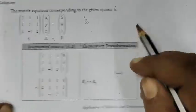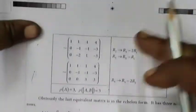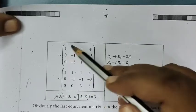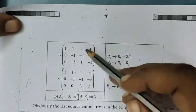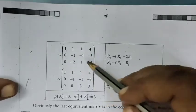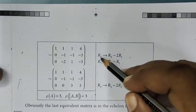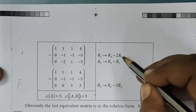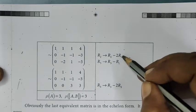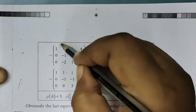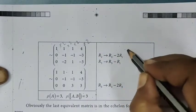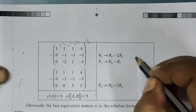This is the elementary transformation. If you want to multiply, it will be easier. What do you do in elementary transformation? R2 minus 2R1. 2R1 is equal to 2R1. R2 is equal to R2 minus 2R1.